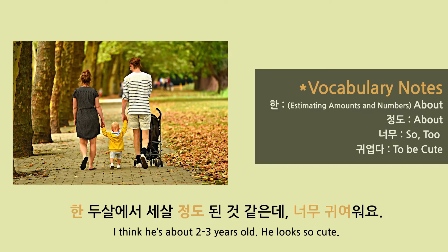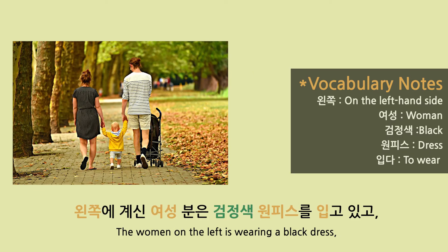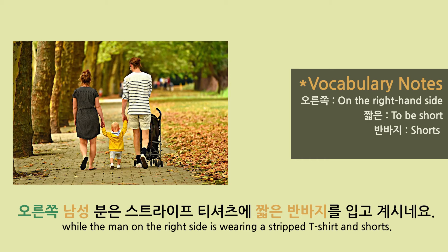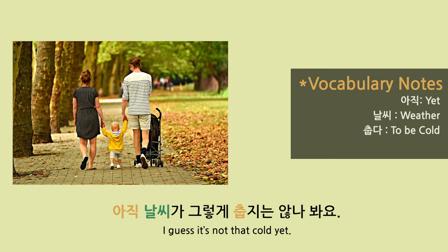한 2살에서 3살 정도 된 것 같은데 너무 귀여워요. (The child looks about 2 to 3 years old — so cute!) 왼쪽에 계신 여성분은 검정색 원피스를 입고 있고, 오른쪽 남성분은 스트라이프 티셔츠에 짧은 반바지를 입고 계시네요. 아직 날씨가 그렇게 춥지는 않나 봐요. (The woman on the left is wearing a black dress, and the man on the right is wearing a striped t-shirt and short shorts. It seems the weather isn't too cold yet.)